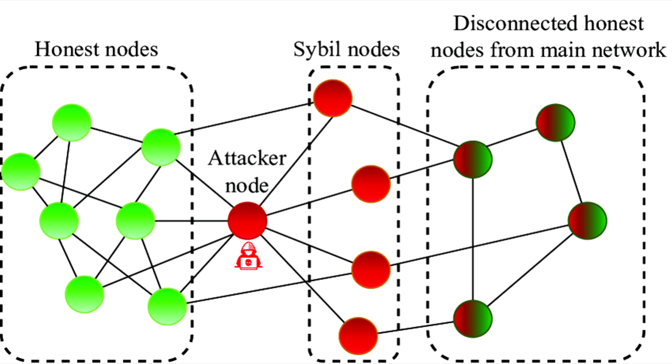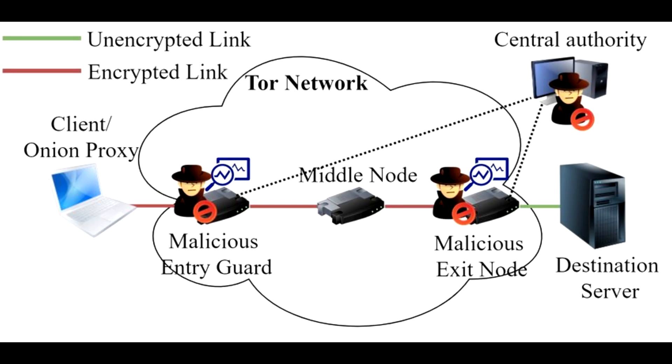The second most common mistake is not verifying your Tor circuit. When accessing a webpage through Tor, you are connecting to various different nodes, all with the task of hiding your identity. One way you could be de-anonymized is through a Sybil attack. In a Sybil attack, the attacker creates numerous fake Tor nodes with the aim of controlling or monitoring your traffic, flooding Tor with malicious nodes — especially entry and exit nodes — to increase the chance that a user's data will pass through nodes they control. If the attacker controls both an entry and an exit node on the same path, they can correlate your traffic and potentially de-anonymize you.